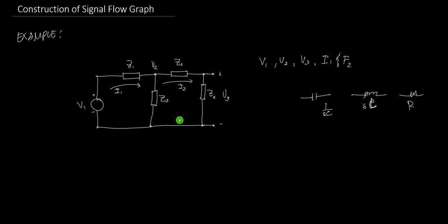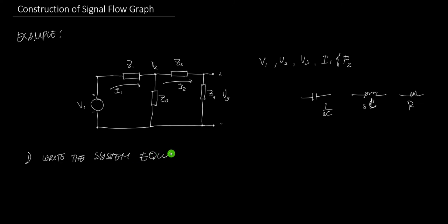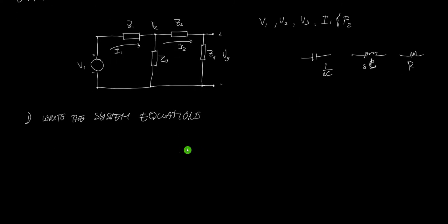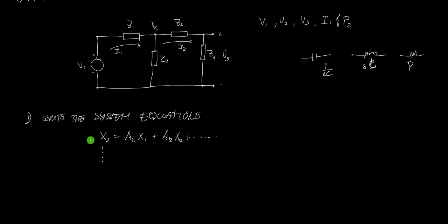To draw and construct the signal flow graph representing this system, there are steps. The first step is to write the system equations. These should be in the form where an output, say X2, equals a gain A11 times X1 plus A12 times X2, and so on. If there are more equations, you write them all.